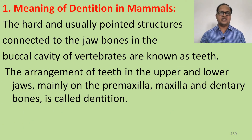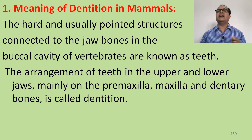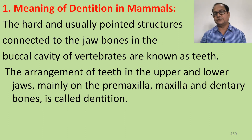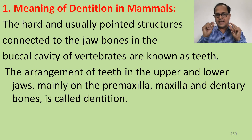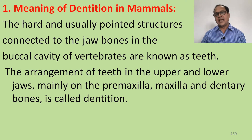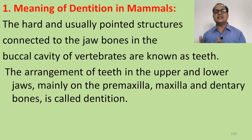The meaning of dentition in mammals: the hard and usually pointed structures connected to the jaw bone in the buccal cavity of vertebrates are known as teeth. The arrangement of teeth in the upper and lower jaw — mainly the premaxilla, maxilla, and dentary — is called dentition.